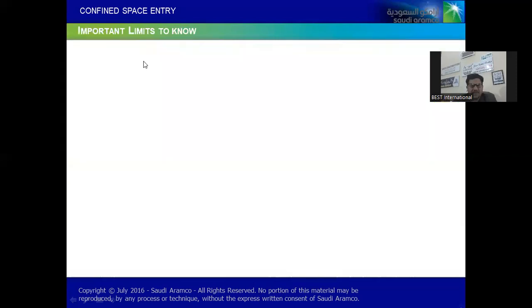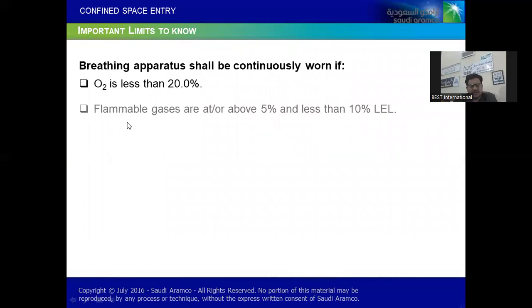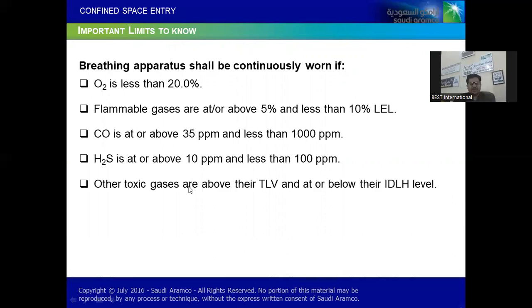Now important limits to know - breathing apparatus shall be continuously worn if oxygen is less than 20%, flammable gases are at above 5% or less than 10%, carbon monoxide is at or above 35 ppm or less than 1000 ppm, we need breathing apparatus or SCUBA. H2S is at or above 10 ppm and less than 100 ppm. Other toxic gases as per their TLV or at or below IDLH level.